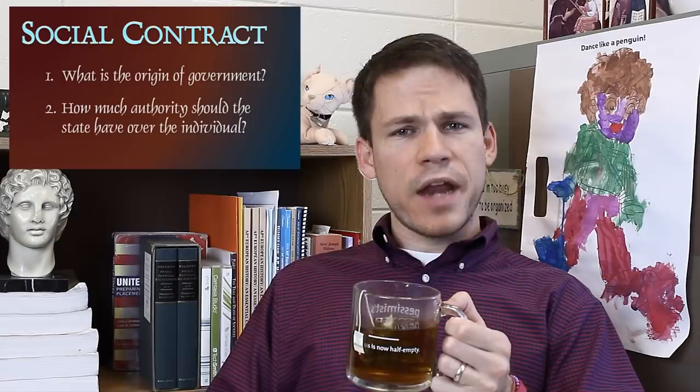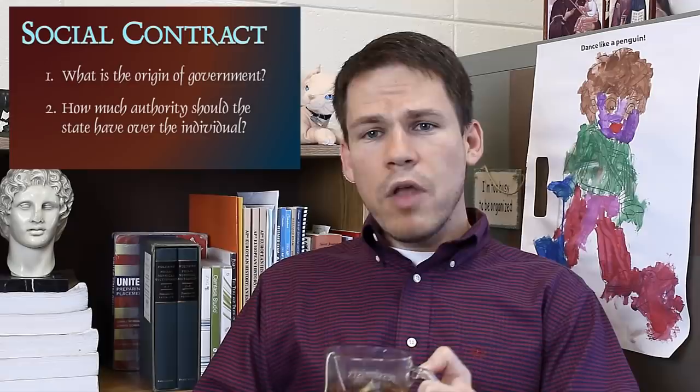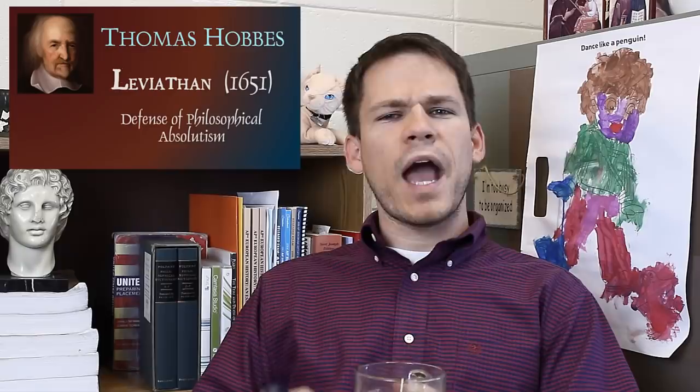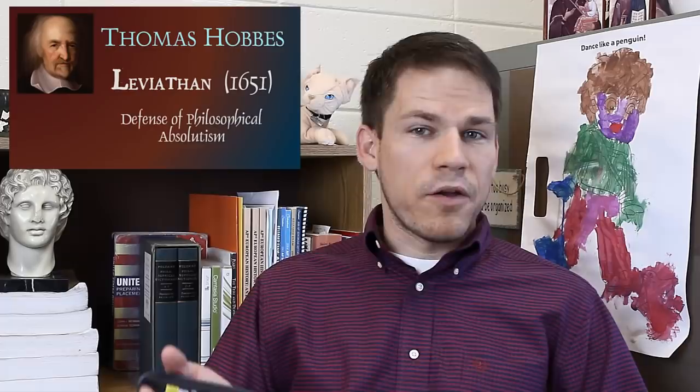Hobbes and Locke are going to sort of agree on the first part, but they're going to disagree on the second part. Let's start off with Thomas Hobbes, who wrote a book called Leviathan in 1651 — remember that, Leviathan, same as Mastodon's second album. In Leviathan, Hobbes is defending philosophical absolutism — the idea that absolute government is not best because it's mandated by God, but just because it's best. Let Hobbes explain to you why.